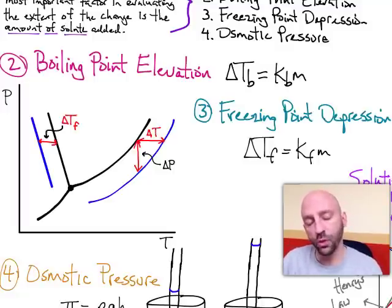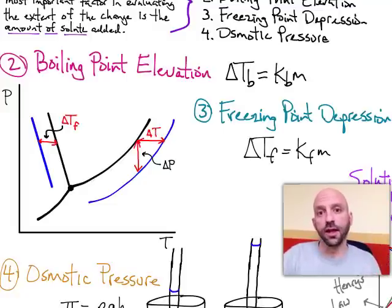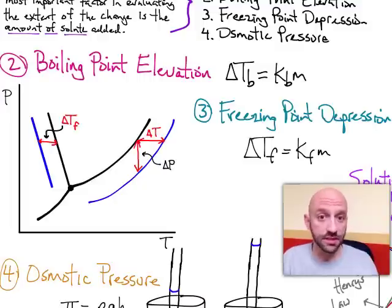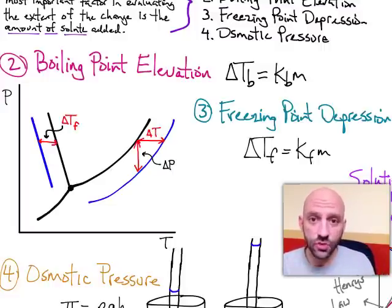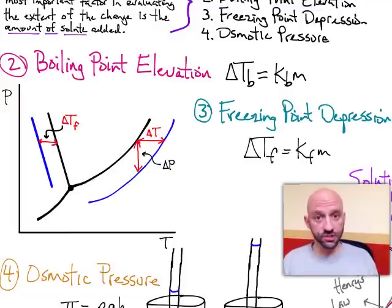The temperature at which you're going to need to get to, to get those solvent liquid molecules to rise in pressure and get to being equal with the atmospheric pressure, right? That's boiling point. When the vapor pressure of the liquid equals the surrounding atmospheric pressure, the temperature you need to get to do that is higher.